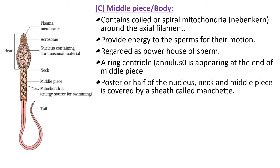The posterior half of the nucleus, the neck, and the middle piece are covered by a sheath called the manchette. The manchette is the sheath which covers the posterior half of the nucleus, the neck part, and the middle piece part.